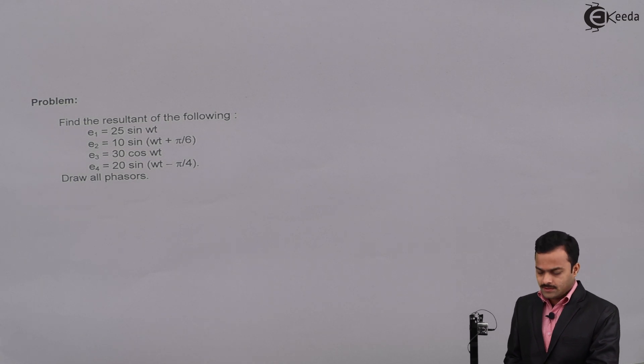There are four quantities given, all of them are voltages. E1 is given as 25 sin(ωt), E2 is 10 sin(ωt + π/6), E3 is 30 cos(ωt), and E4 is 20 sin(ωt - π/4). We are supposed to find out the resultant and draw all phasors.